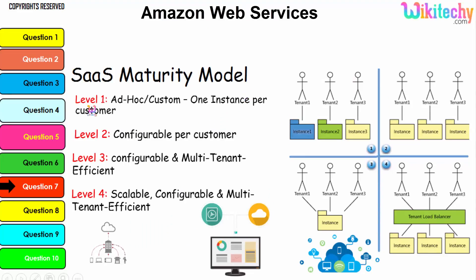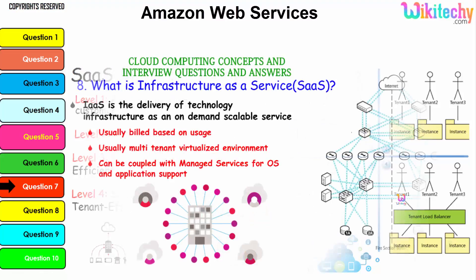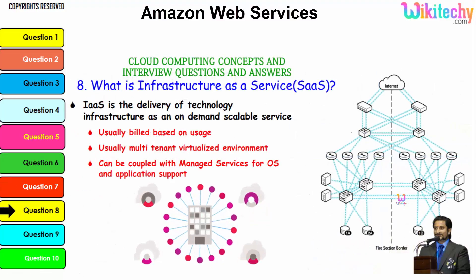You are able to see level one here — one instance per customer. Level two is configurable per customer, shown in a different color with multiple instances. Level three is configurable with a multi-tenant architecture, where you have a load balancer. It is scalable, convertible, and multi-tenant — this is your cloud computing network or environment.